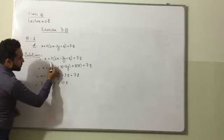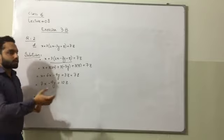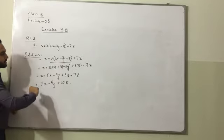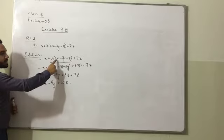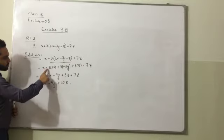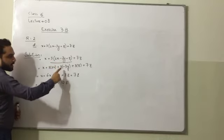We can see here, we have bracket. So first we will solve the value includes in bracket. So if we solve it, we can see here 3 is multiplying with 2x. So this will become 3 multiplied by 2x. Then 3 is multiplying with 3y.